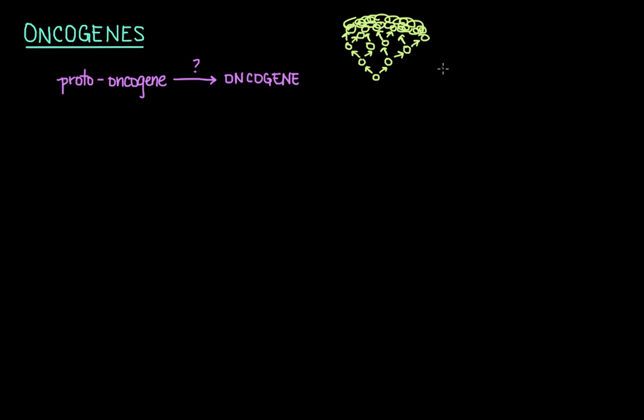The words oncogene and oncology, which is the study of cancer, share the same root word — onkos — which is Greek for mass or bulk. The products of these genes are often involved in signal transduction and the execution of mitogenic signals. A mitogen is a chemical substance that encourages a cell to start cell division, basically something that triggers mitosis.